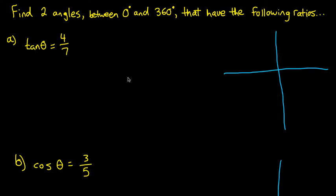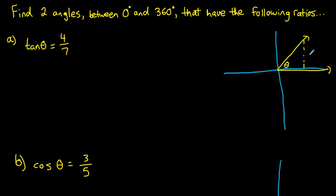Let's look at how to find two angles between 0 and 360 that have a given trig ratio. Your calculator is good at giving you one of the possible angles between 0 and 360 that would have a tan ratio of 4 over 7. There is an angle that has a tan ratio of opposite 4 over adjacent 7, and the calculator could give us that first angle if we used inverse tan of that ratio.